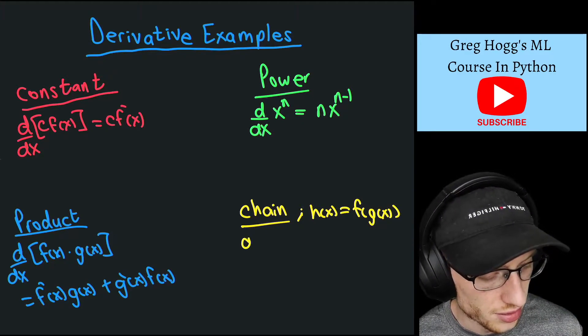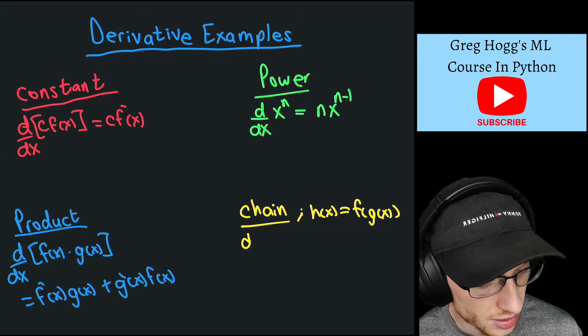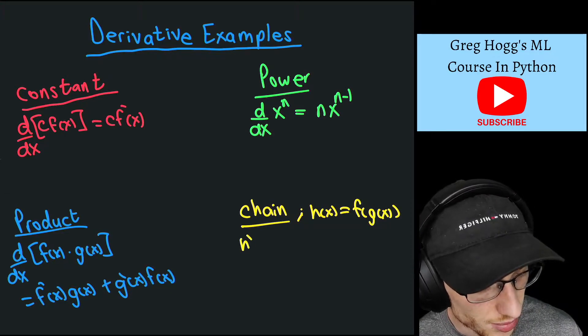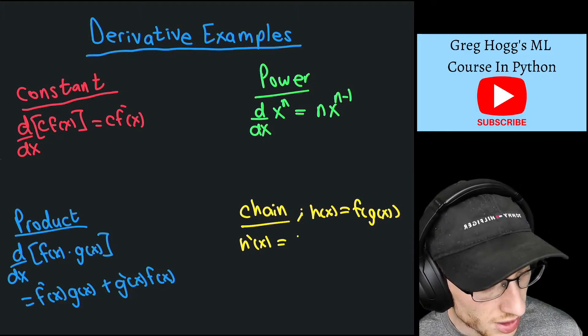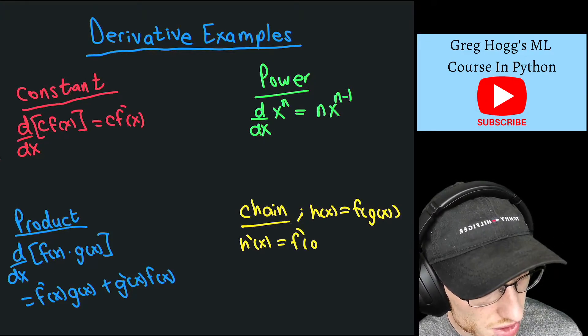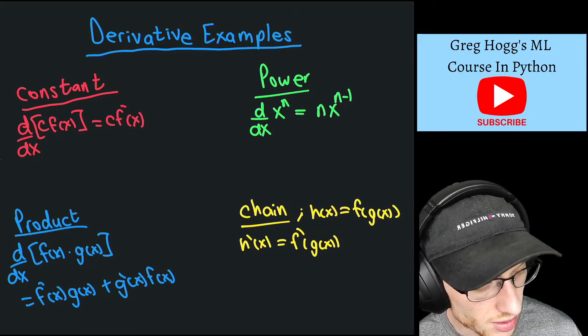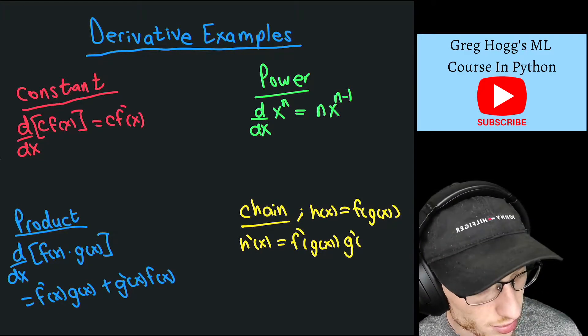And so the derivative, or h'(x), so h'(x), the derivative of h with respect to x is equal to f'(g(x)) times g'(x).